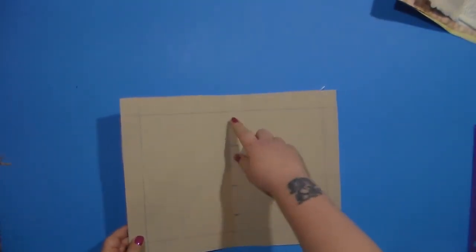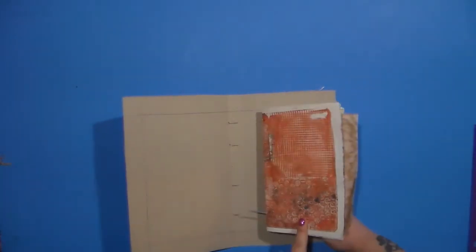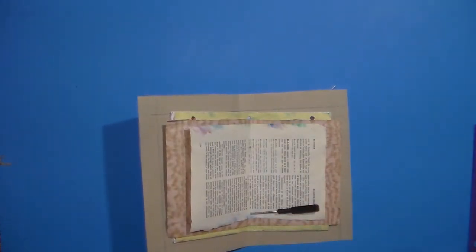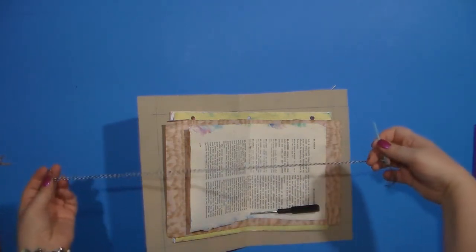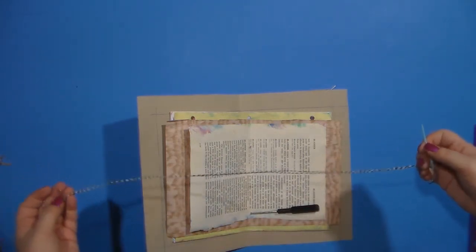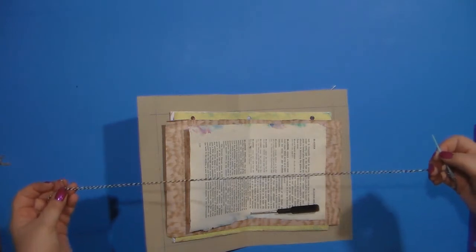As soon as you poke the holes out using an awl or a beading reamer you're going to line them up and this is where you take your thread or string make it so it's about probably about the size of a yardstick.